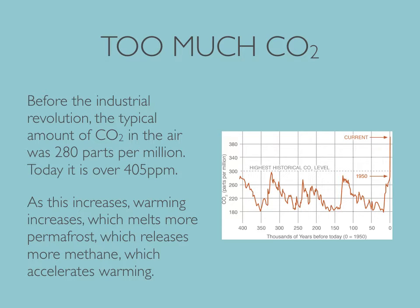The problem with climate change is there's too much carbon dioxide in the atmosphere. Prior to the Industrial Revolution, when we started burning fossil fuels for energy, the measurements from ice cores of how much CO2 is in the air was around 280 parts per million. Today that's over 405 parts per million and it's been increasing at an accelerating rate. As CO2 increases, warming also increases. As warming increases, that melts more permafrost in northern Canada and Siberia, which exposes organic plant matter trapped under the ice. As that plant matter decomposes, methane enters the atmosphere, which is 25 times more warming than carbon dioxide. So what we're going to have in the not-too-distant future is an accelerated negative feedback loop of warming.